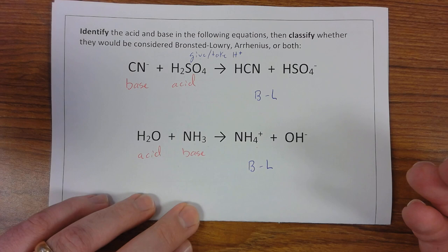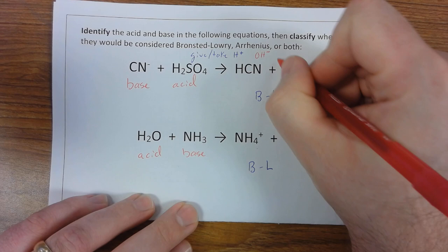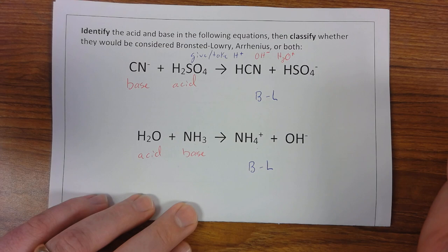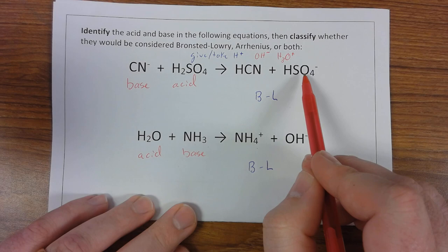Now for Arrhenius, Arrhenius was more focused on water. What Arrhenius talked about is what effect this would have on water. So water would actually be part of the equation. The things to look for for Arrhenius are OH-, which is called hydroxide, and H3O+, which is called hydronium. Now, if you don't see these in the reaction, it's not going to be considered an acid-base reaction under Arrhenius.